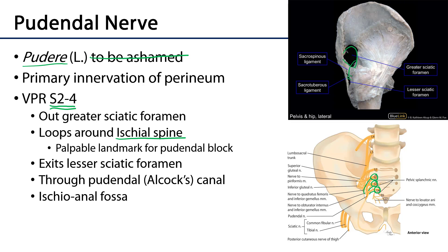The ischial spine may be palpated through the lateral wall of the vagina, giving the clinician a palpable landmark toward which to administer anesthetic. As the pudendal nerve moves through the lesser sciatic foramen, it heads into the pudendal canal, also known as Alcock's canal, named for Benjamin Alcock, its discoverer and the hero Irish anatomist. That canal is a space through the fascia of the obturator internus muscle, leading toward the ischio-anal or ischio-rectal fossa.